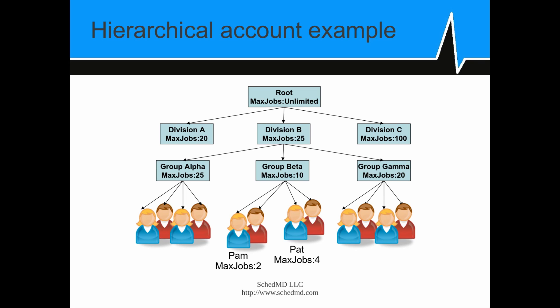Here's an example of what is in the database with respect to accounts. This shows limits where you've got a root account with no limit on the maximum number of jobs, and then we define different limits at different points in the hierarchy. Each one of those divisions and groups represents a different account and different users. For example, if you have an account coordinator at Division B, he could increase the maximum number of jobs for any one of those groups up to 25 or decrease it as desired, and could also directly modify the limits on the individual users.